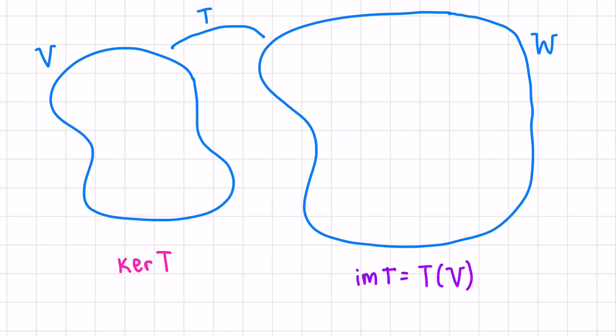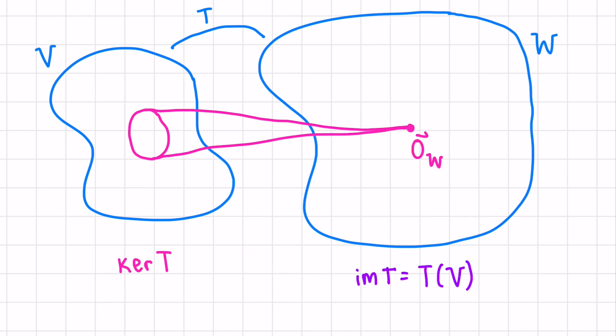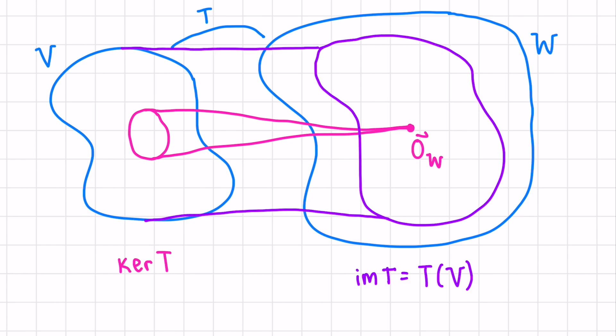If V is our domain, where we're starting, the kernel is right in here — it's all the vectors that map to the zero vector in our codomain. On the other hand, the image of the transformation, which we can also represent as T of V, is the transformed version of our original vector space. What will that look like in our new space? This is the image of our transformation, or the space that it reaches — how much space does it cover in W, our codomain?